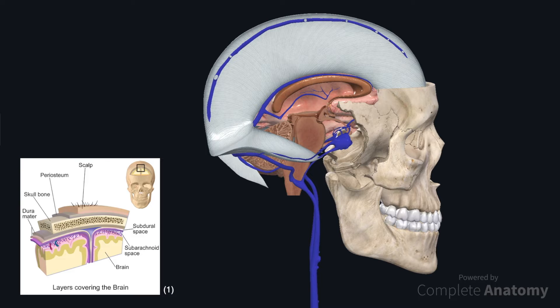In this video we will cover the dural reflections and dural venous sinuses. The cranial dura mater is a thick, tough bilaminar membrane that is adhering to the internal aspect of the calvaria.